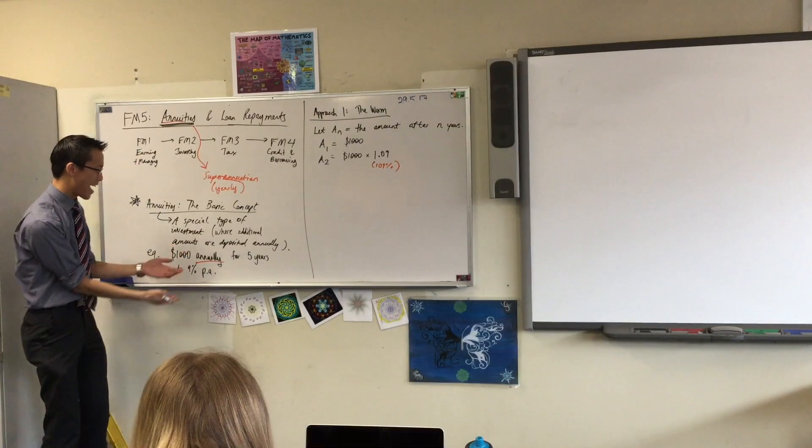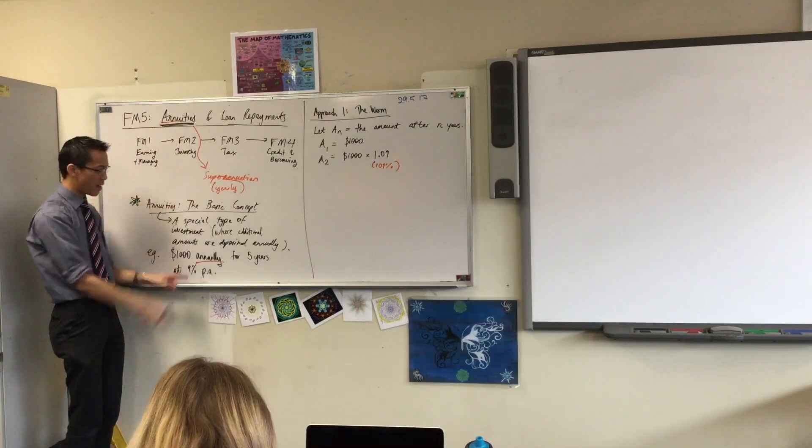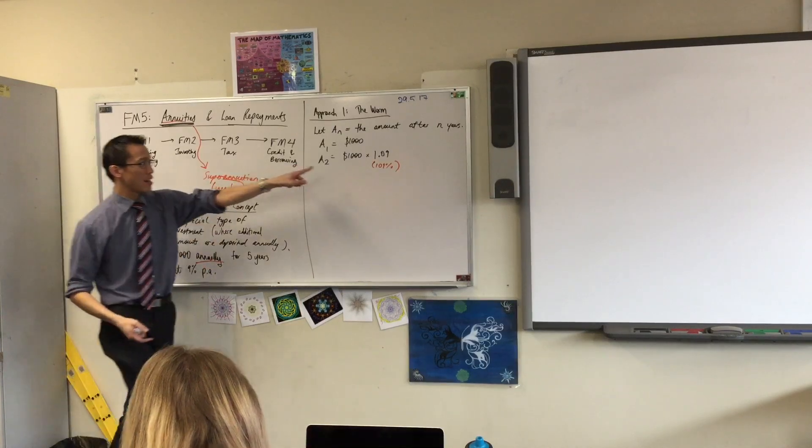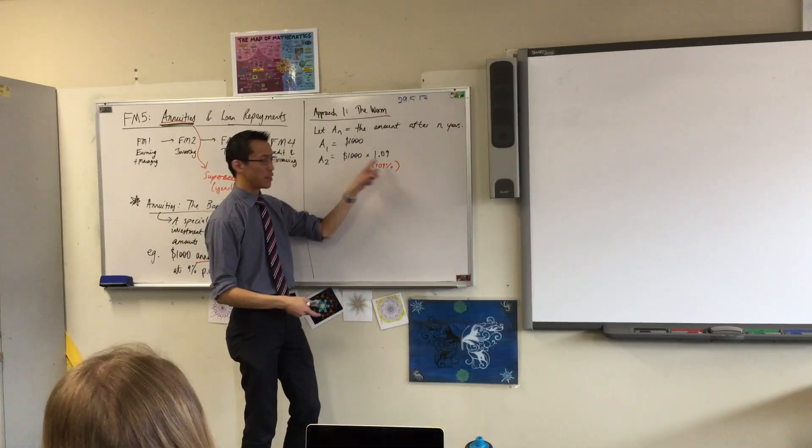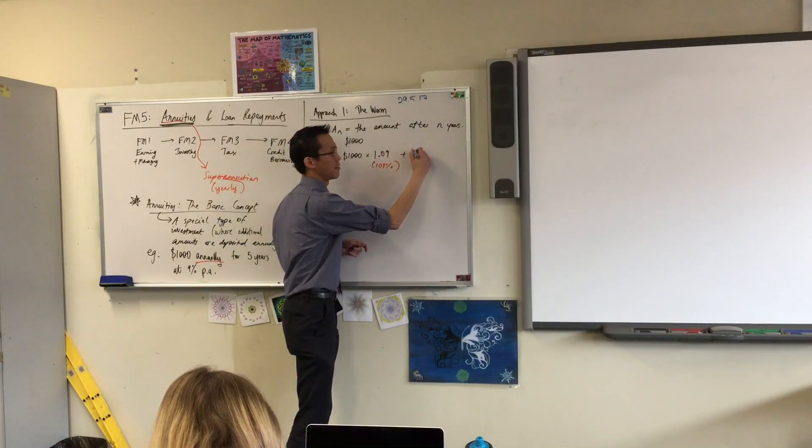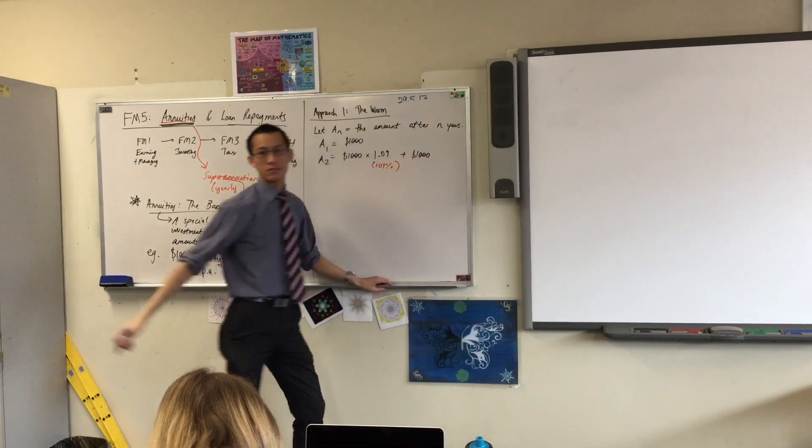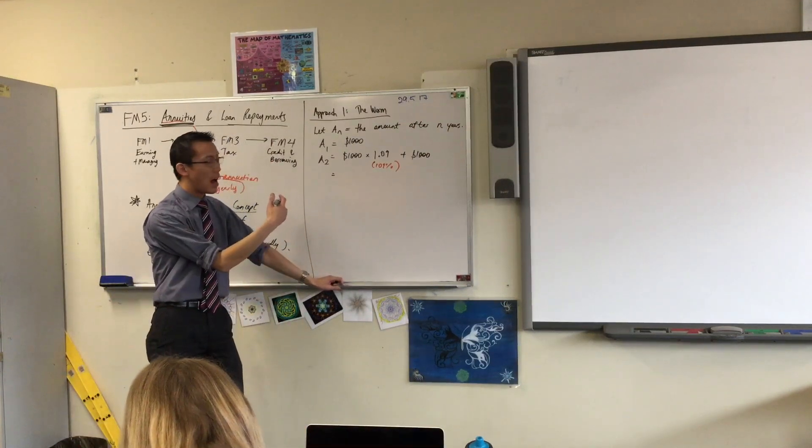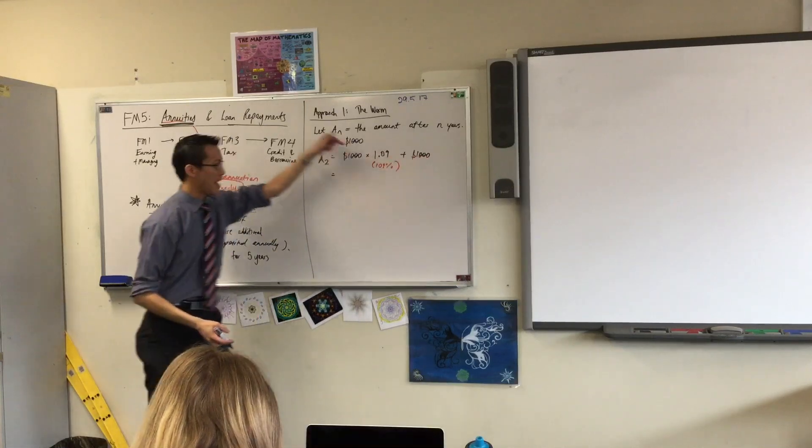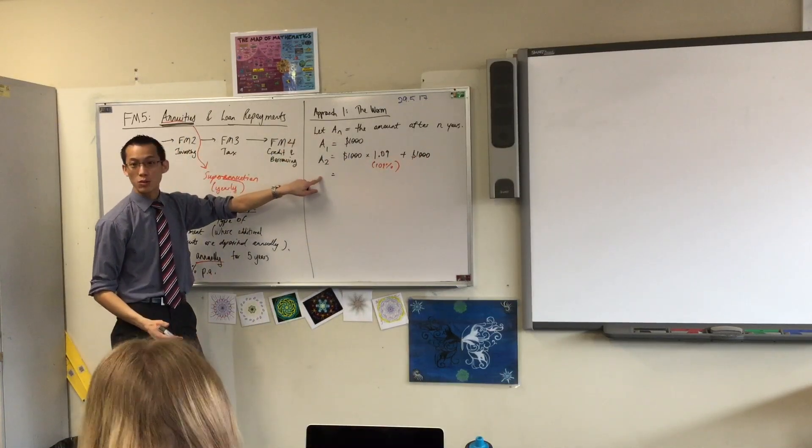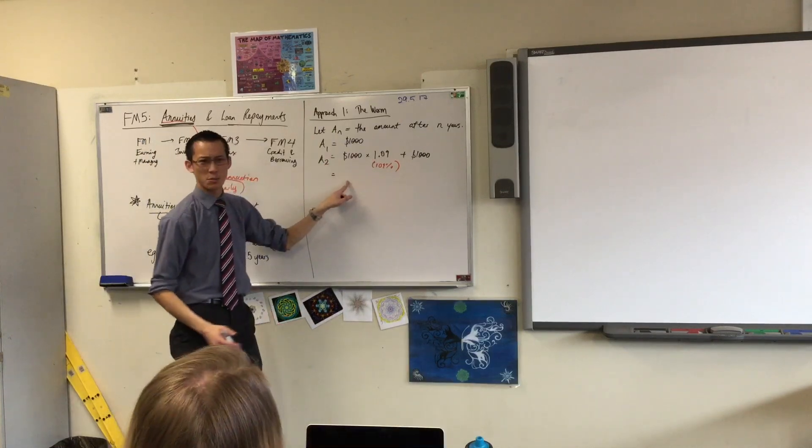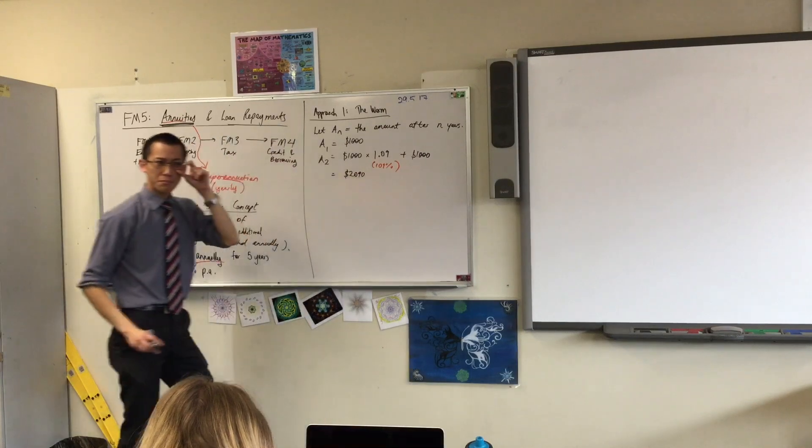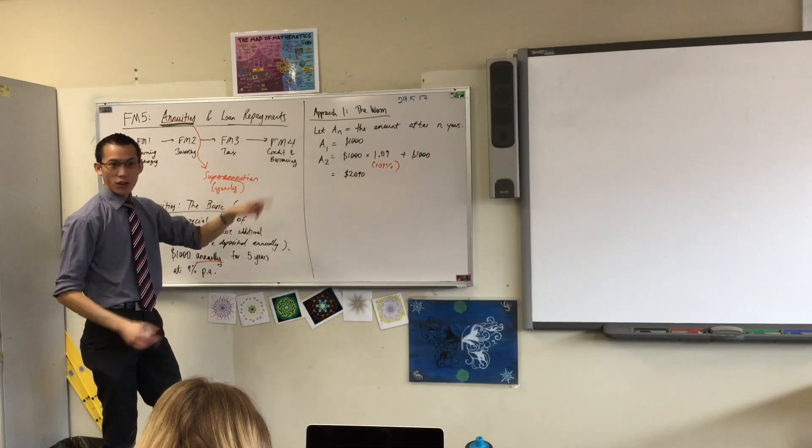Now, they've given you interest. That's good. But remember, we said this is different to FM2. We're not just going to let the money sit there. We're going to put in another $1,000. So here's what happened to your original $1,000, and then you add another $1,000. Now, this is where your calculator comes in. I now know what the amount is after two years. It should be 2090, right?